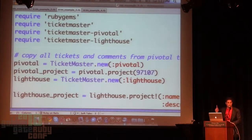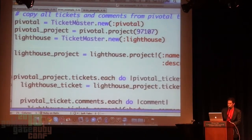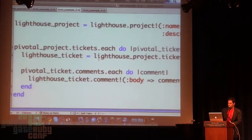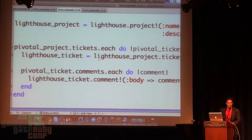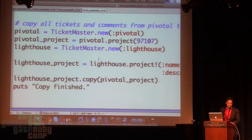Now let's talk about something more interesting. I would like to take all of my Pivotal tickets and move them to Lighthouse. We're going to open the Ticketmaster Pivotal and Lighthouse providers, open the Pivotal project, open the Lighthouse provider, create a new Lighthouse project, and then for each of the Pivotal tickets go through and create a new Lighthouse ticket and copy the comments in.